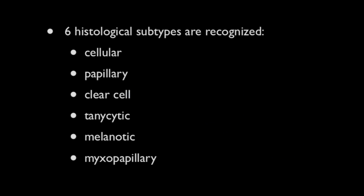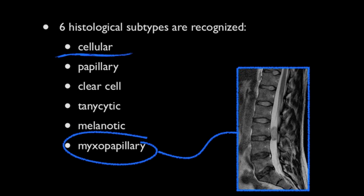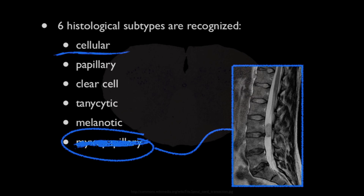Ependymomas are divided into six histological subtypes, of which cellular is the most common. It's important to note that myxopapillary ependymomas, which are sometimes discussed under the ependymoma group, really represent a distinct entity in terms of radiology, as they occur in a different location — namely around the cauda equina — with different demographics and different appearances, and as such it is best to consider these completely separate entities.